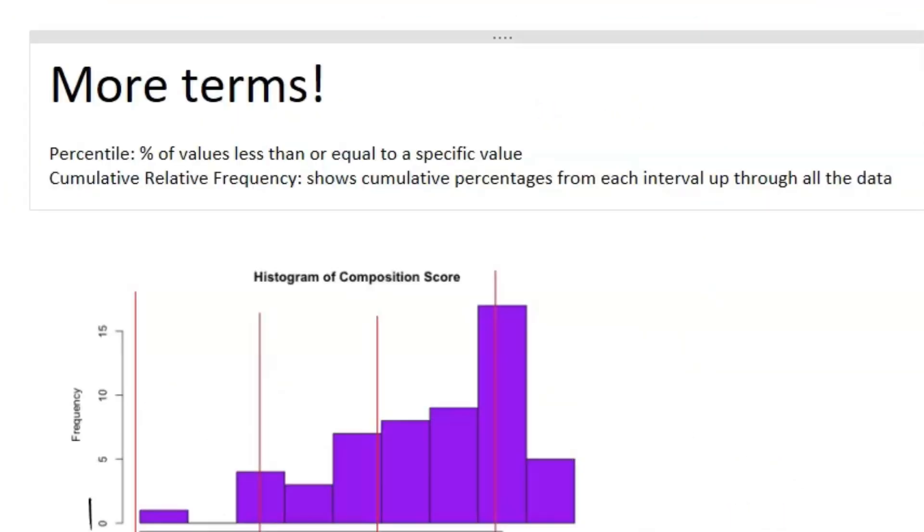Alright, so to round off AP Stat Unit 1, we just have a couple more terms, and then we'll get into normal distributions. The first is officially defined percentile. We did talk about it, but how I think you should think about it is that it is the percentage of values that are less than or equal to a specific value.